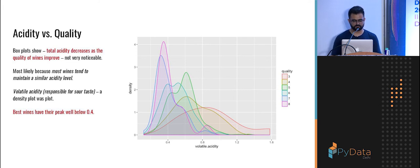So acidity versus quality. I like box plots here. The reason I chose box plot was because it would amalgamate all the variables in one single box per category of wine. So the box plot did show me that the total acidity decreases as the quality of wines improve. So wines should not be very sour when you're tasting them. And you can also see that the best wines have their peak well below 0.4. So I can see the median line, they'll all lie below 0.4.